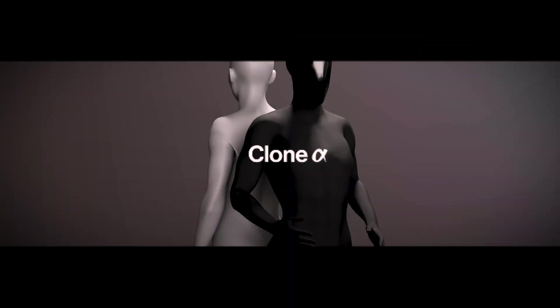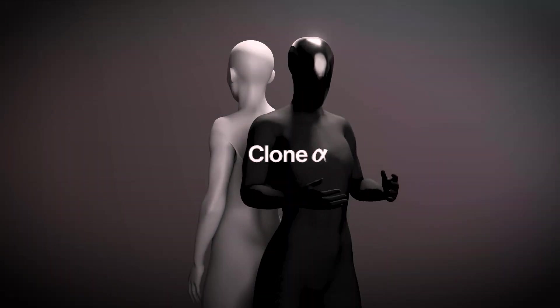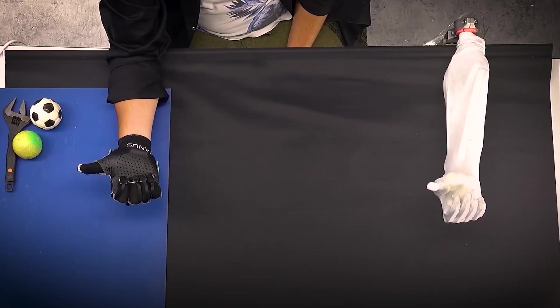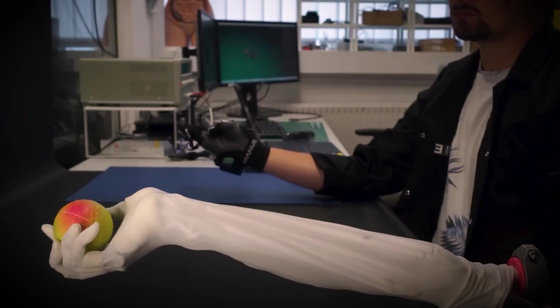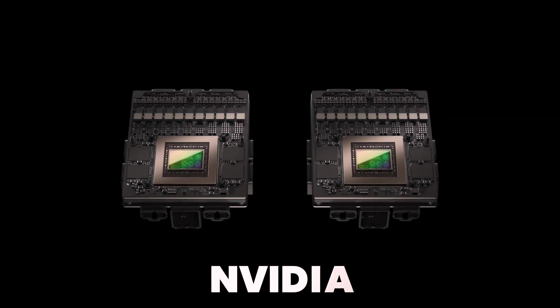This is Clone Alpha, a humanoid so realistic it moves, learns and thinks like a human. But here's the crazy part, this thing doesn't use motors. It's got artificial muscles, a hydraulic heart and a supercomputer brain powered by Nvidia that lets it learn by just watching you.